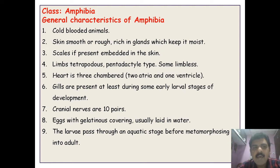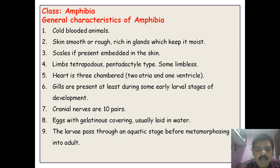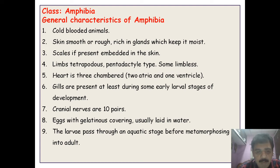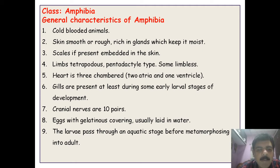Some animals in Amphibia are limbless — without forelimbs and hind limbs. The heart in Amphibia is three-chambered, having two auricles and one ventricle. Gills are present at least during early larval stages, so the early stages of their life cycle are spent in aquatic habitat, and therefore these animals must go to water bodies for reproduction.